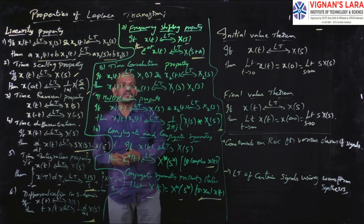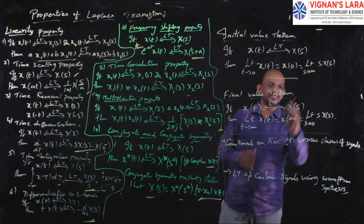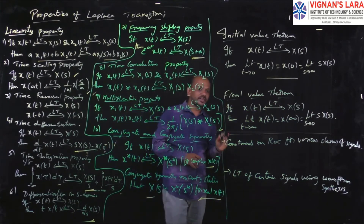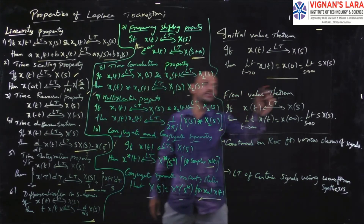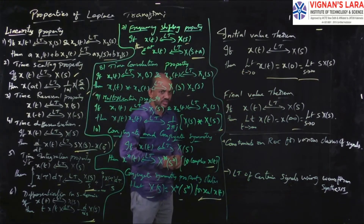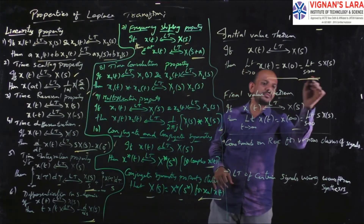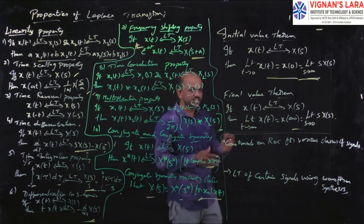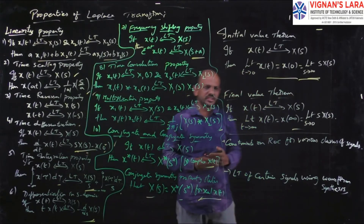You have to go for the proofs of these properties. Along with these, there are two very important properties in Laplace transform that are different from Fourier transform — the initial value theorem and the final value theorem. Remember these formulas very well because problems will be based on them. They may ask you to find the initial value or the final value, and by using these formulas you can find both.